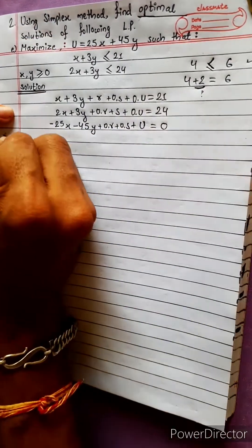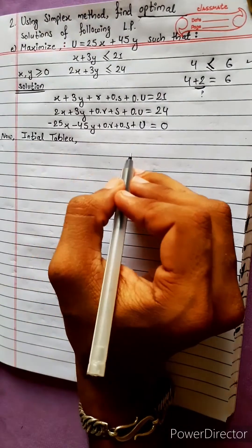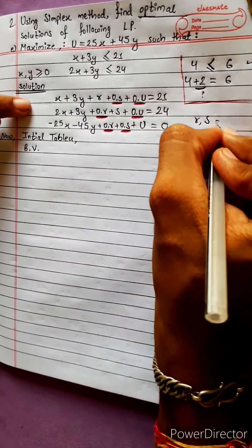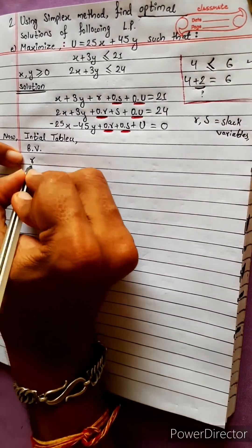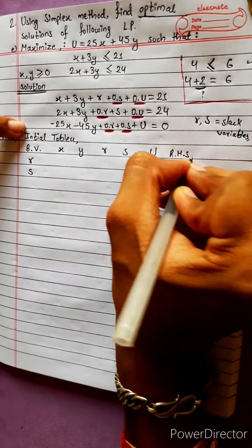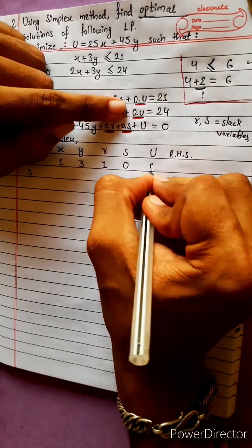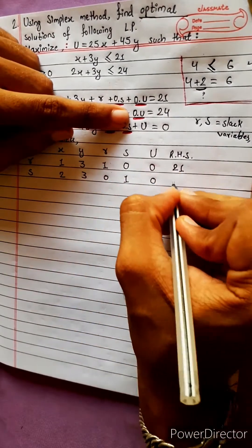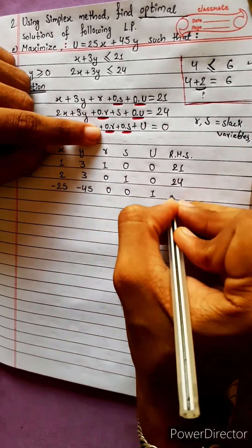This is the standard form. Now we are going to create the initial table. The basic variables are the slack variables. The initial tableau values are: row 1: 1, 3, 1, 0, 0, 21; row 2: 2, 3, 0, 1, 0, 24; row 3 (objective): minus 25, minus 45, 0, 0, 1, 0.